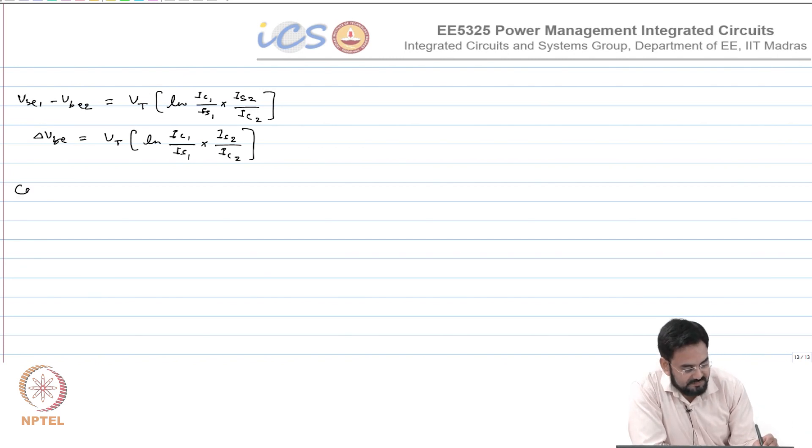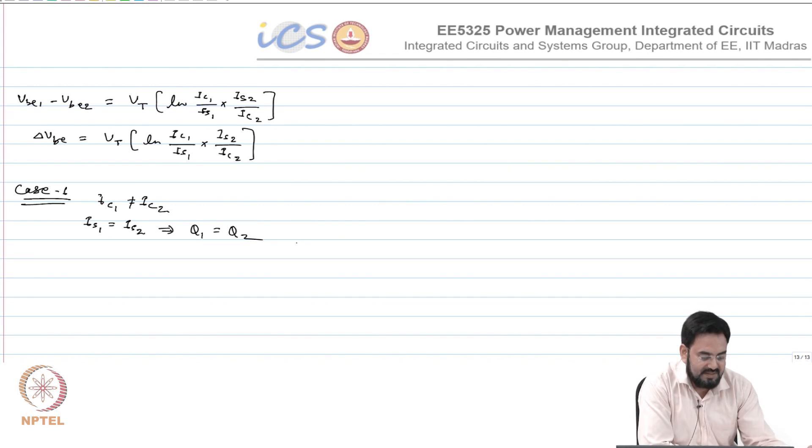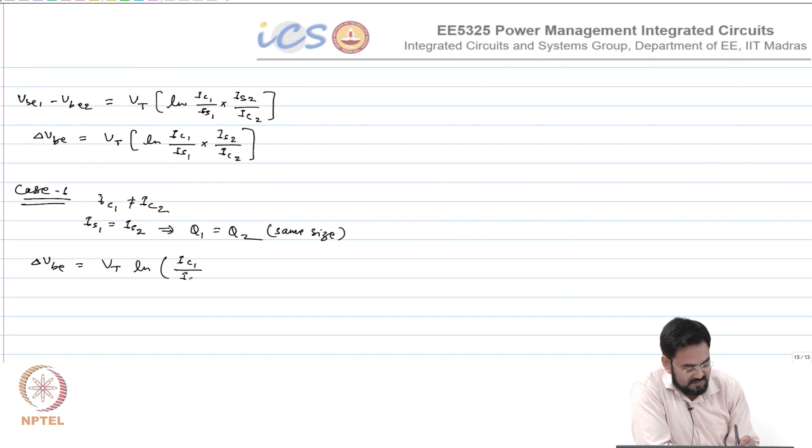So Case 1: IC1 is not equal to IC2, and IS1 equal to IS2, which means Q1 equal to Q2 in terms of size. So your delta VB will become VT ln IC1 over IC2.